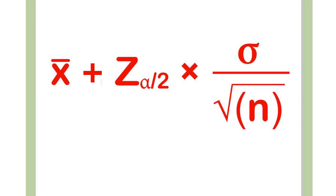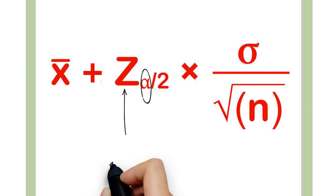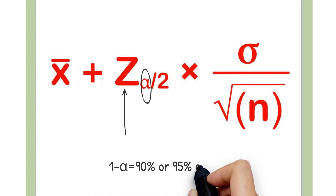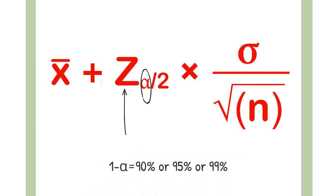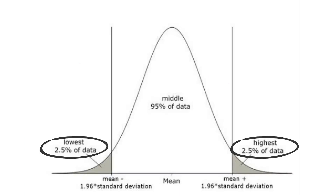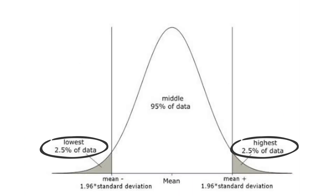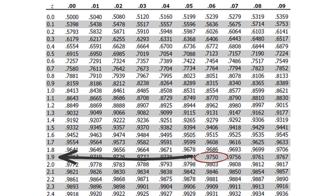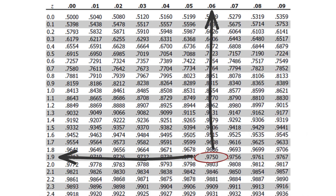To find the z-value for the confidence interval formula, we first need to pick a level of confidence. The most common ones are 90%, 95%, or 99%. Let's assume we want to be 95% confident, or 2.5% in each tail. Then, looking at the z-table for 97.5%, we find that the z-score of 1.96 corresponds to that probability.